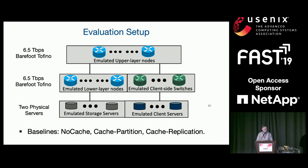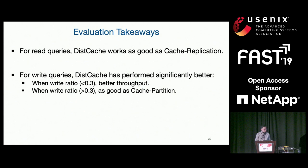For evaluation, the setup uses two 6.5-terabit Belfort Tofino programmable switches to emulate upper-layer and lower-layer cache nodes and client-side switches, plus two 68-core physical servers to emulate storage and client servers. Baselines are: no cache, partition, and replication. The key takeaway is: for read queries, disk cache works as well as replication. For write queries, disk cache performs significantly better when write ratio is reasonable — less than 30%, which is already quite high. Even with a larger write ratio above 30%, disk cache is no worse than partition.